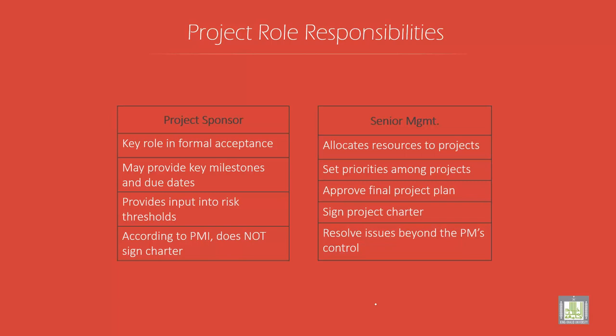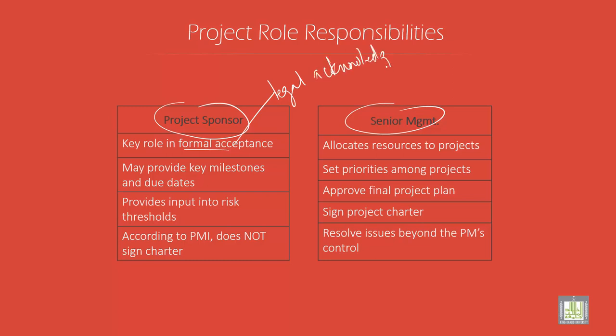We have two types of responsibilities: project sponsor and senior management. The first is the key role in formal acceptance. Formal acceptance is a legal acknowledgement that the project deliverables have been delivered as intended.